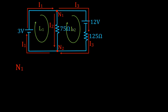The next step is to apply the current rule and the voltage rule. We're going to apply the current rule at N1 and also at N2. The current rule says that at N1 the sum of the currents into the node are equal to the sum of the currents leaving the node. We have one current in and two out, so we write: I1 minus I2 minus I3 equals zero.